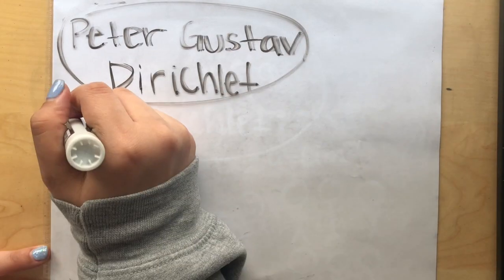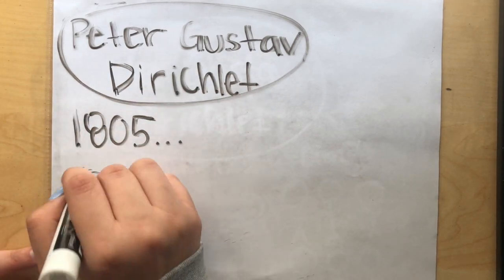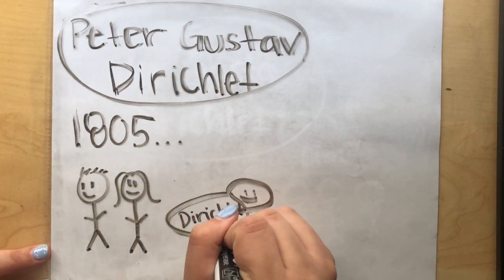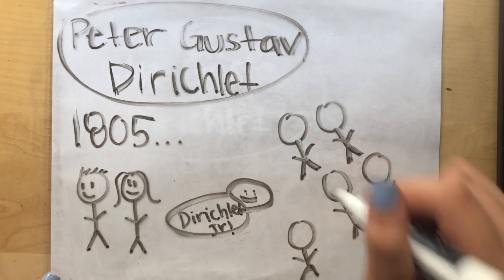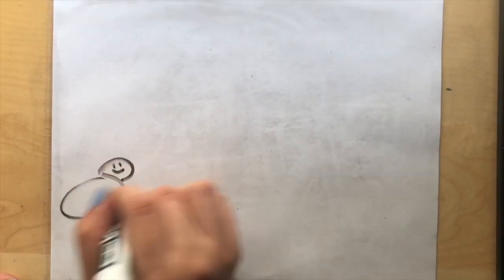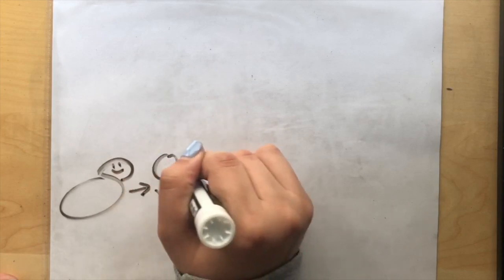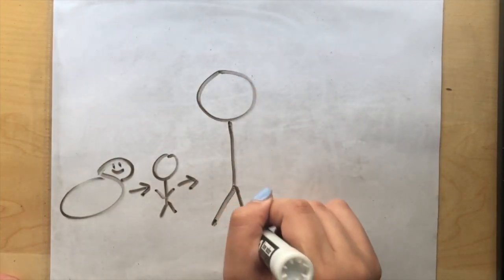Peter Gustav Dirichlet was born February 13, 1805. He was the seventh and last child to his parents. Dirichlet was a very smart child, and he showed an interest in math at a very young age.